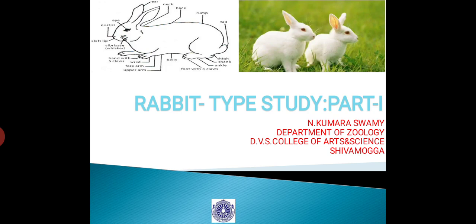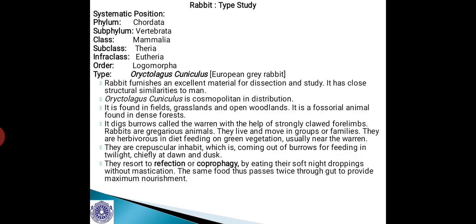Good morning students. Today let me start with a new topic, what is known as rabbit type study. Type study includes the study of different features of the body of this rabbit, like morphology and anatomical features of the systems such as the digestive system, respiratory system, nervous system, excretory system, and reproductive system. In this slide you will observe the morphology of the rabbit, and that is for your reference.